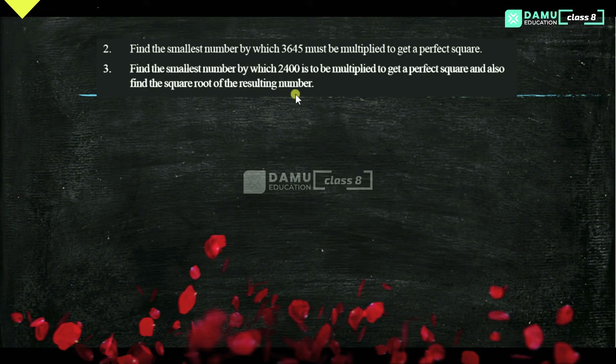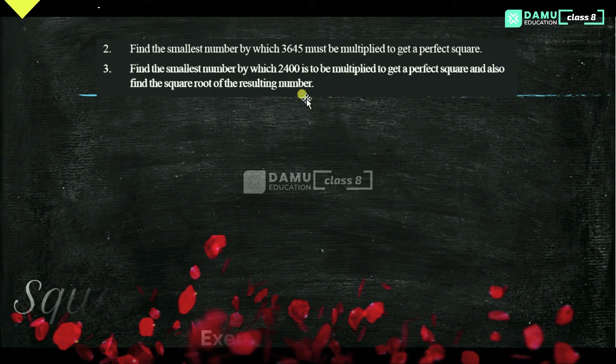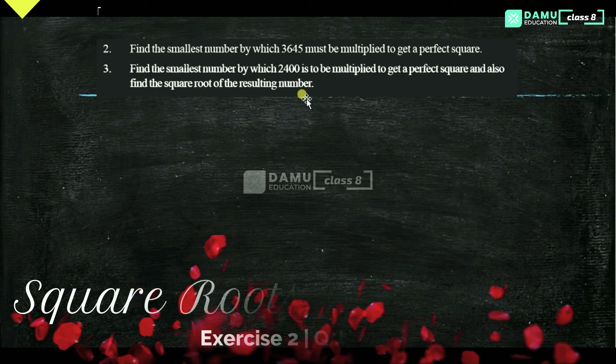So in this module, we are going to discuss the second question: Find the smallest number by which 3,645 must be multiplied to get a perfect square.